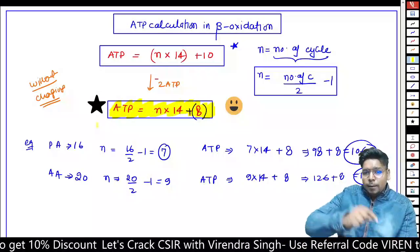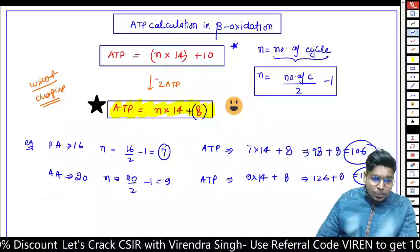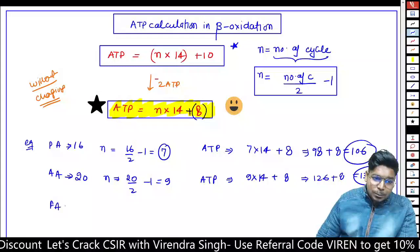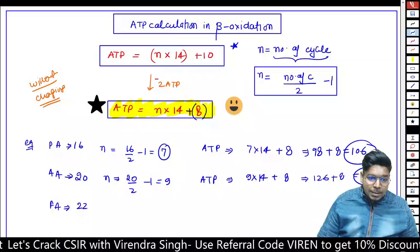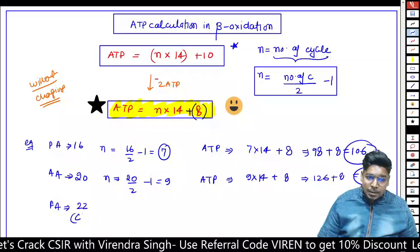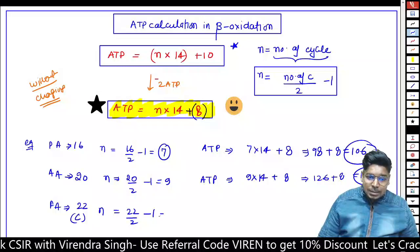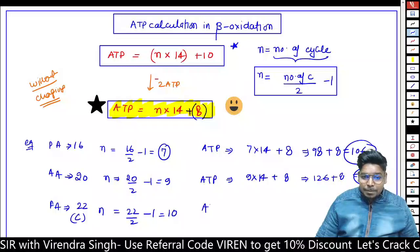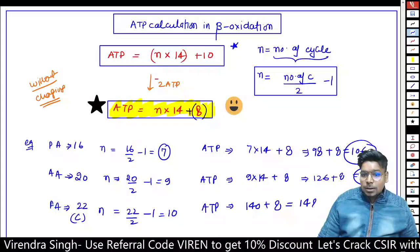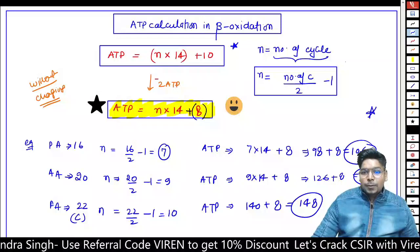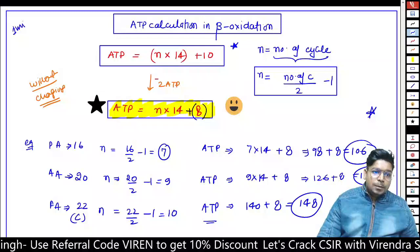Remember this formula - it works reliably for any fatty acid and you can calculate it within a minute. One more example: a fatty acid with 22 carbons. N = 22 by 2 minus 1, that is 10. ATP = 10 into 14 plus 8, that is 140 plus 8, which equals 148. Answer in one minute!